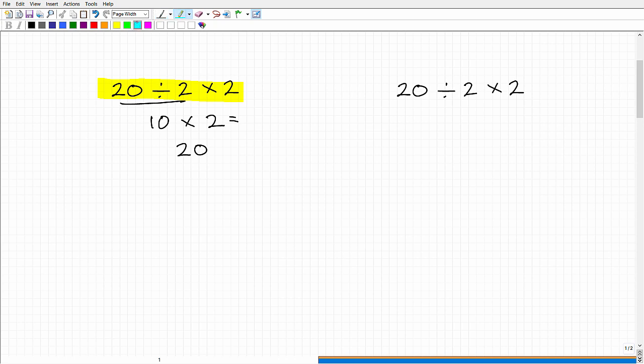However, what if someone approached the problem this way? They said, well, 20 divided by 2 times 2. Let's see, 2 times 2 is 4. So that gives me 20 divided by 4. And 20 divided by 4 is 5. Got a little bit of a problem here. I got two answers. I got 20 and 5.